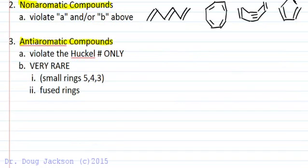But if we force planarity with a very small ring, such as a 5-membered ring here with the cation, we have 4 pi electrons, so we have 4n. We violate the Huckel number with 4n. And 4 pi electrons, we force planarity.